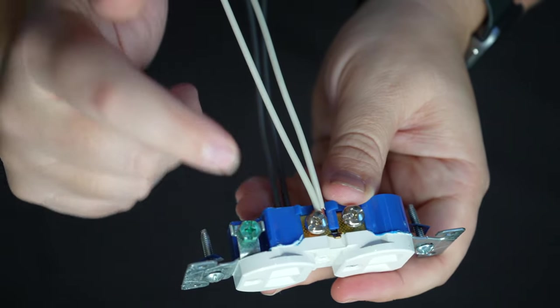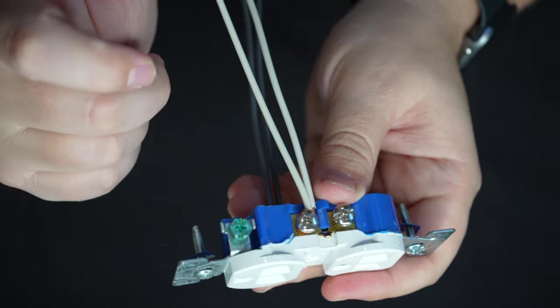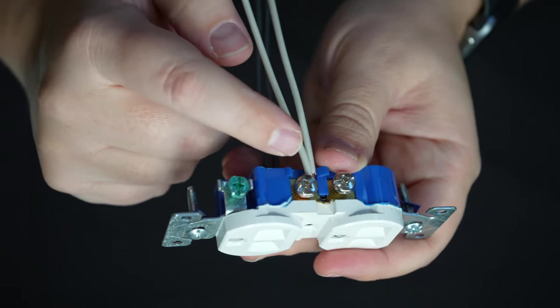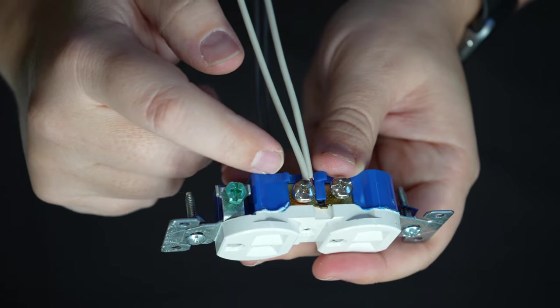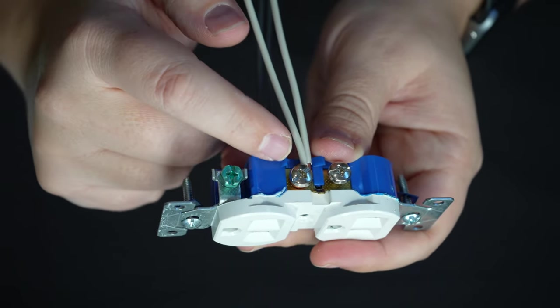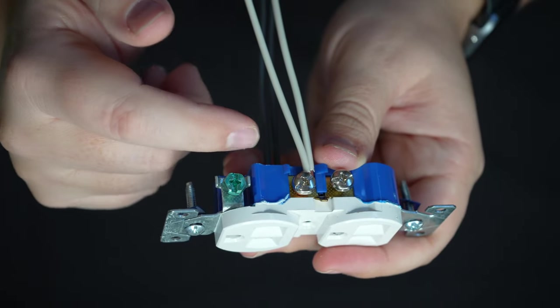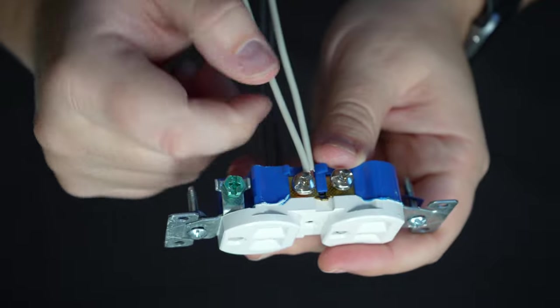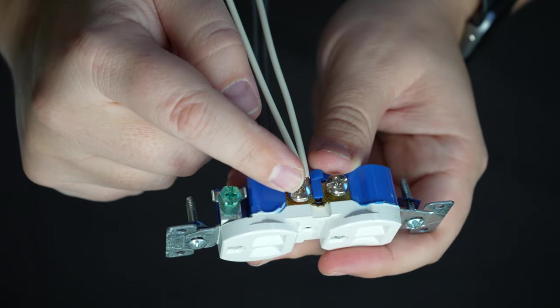But with this method, the problem with this is this does not provide a tight connection. This is prone to loosening up over time. This is also prone to carrying current incorrectly too. So you might have an issue where this could get hot because of the amount of current flowing through this. It could start arcing. It could cause all kinds of issues. So you never, never, ever want to double up wires underneath a terminal screw.